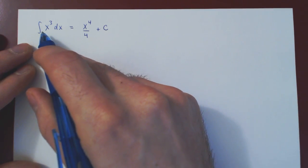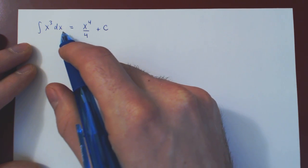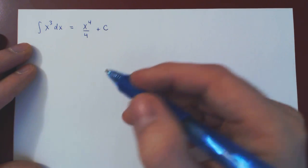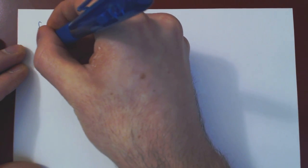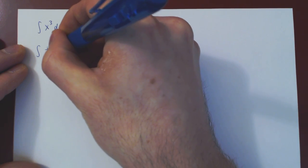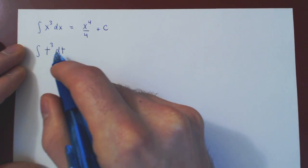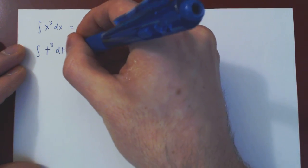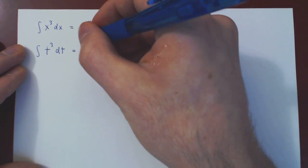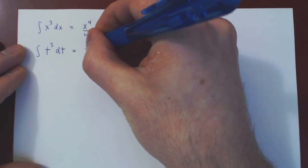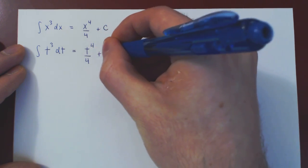But there is nothing special about using the variable x. I could use any other variable and the power rule would apply the same. I could say I'll integrate t cubed with respect to t, therefore the integral of t cubed dt. And we apply the power rule just the same. We add 1 to the exponent divided by the new exponent plus c.